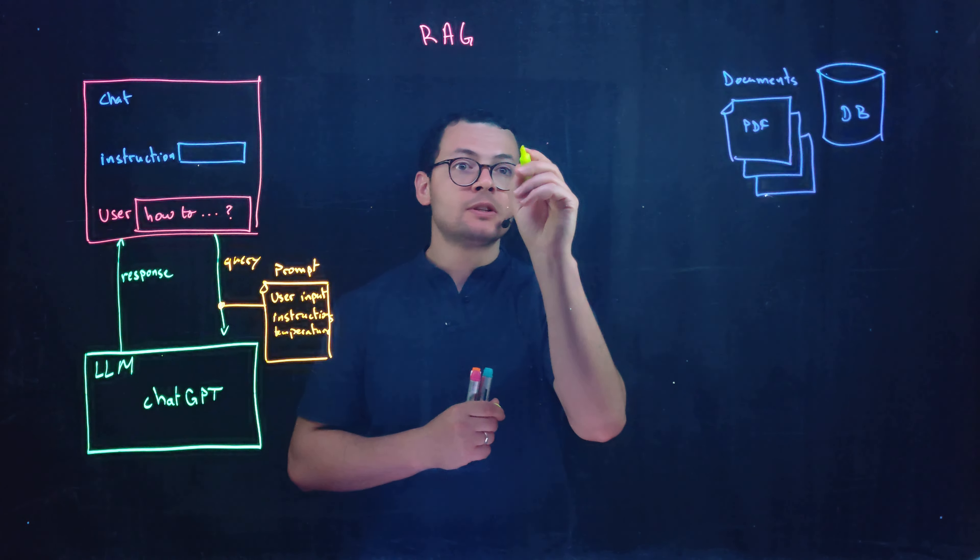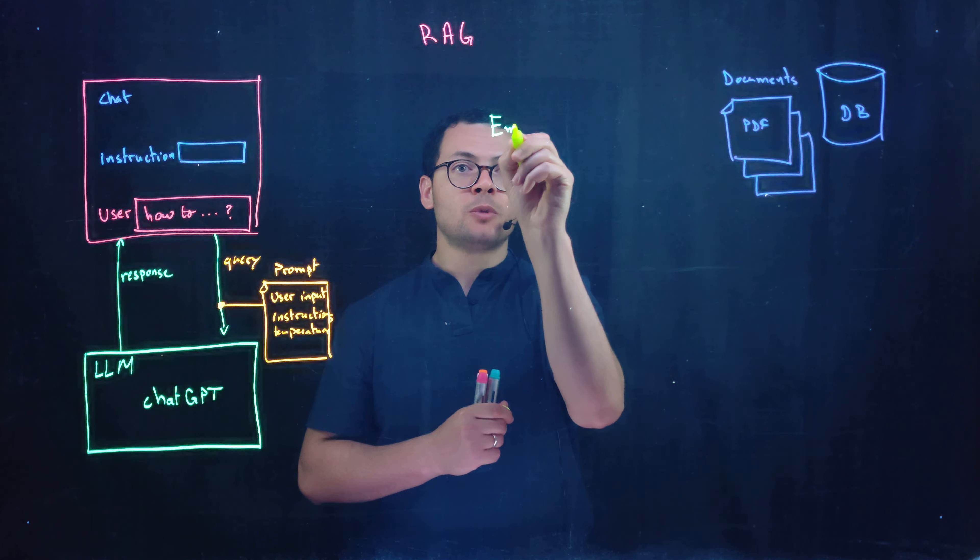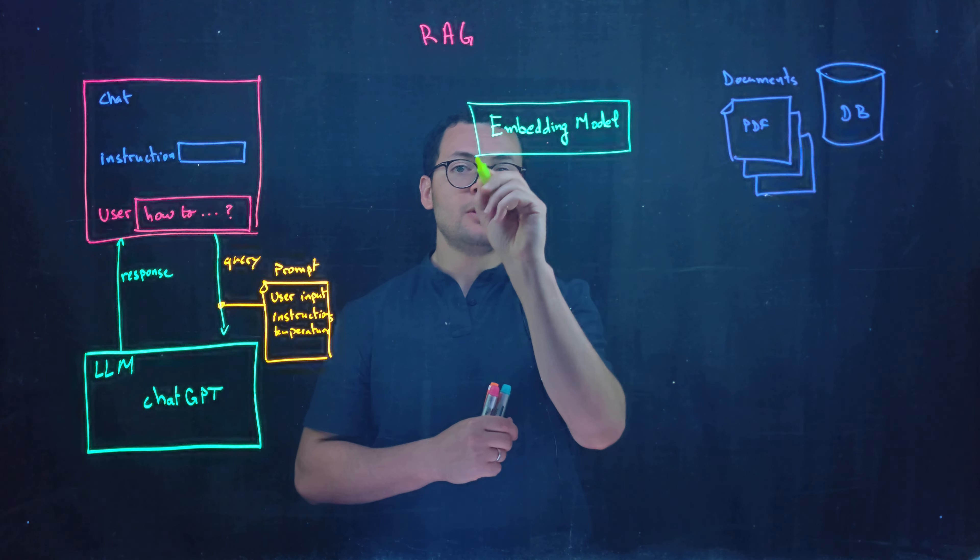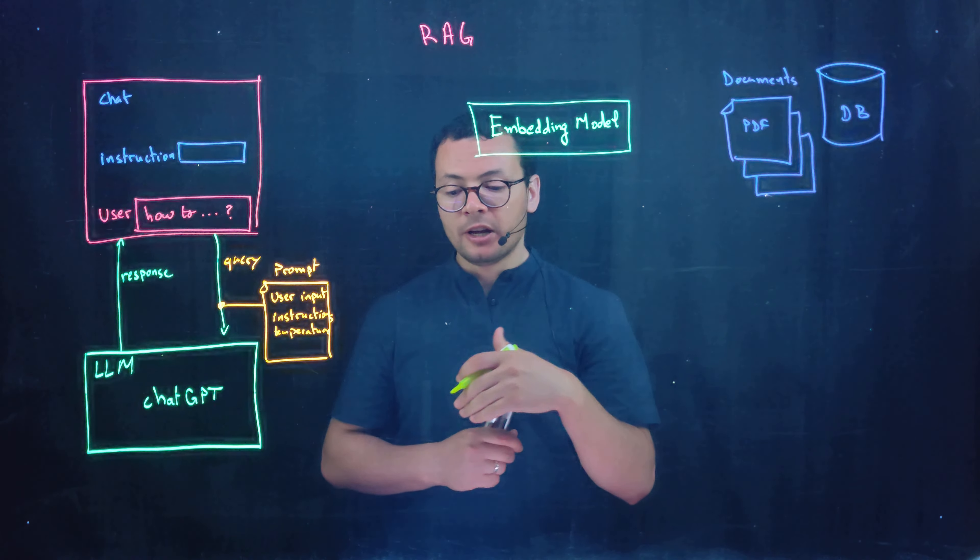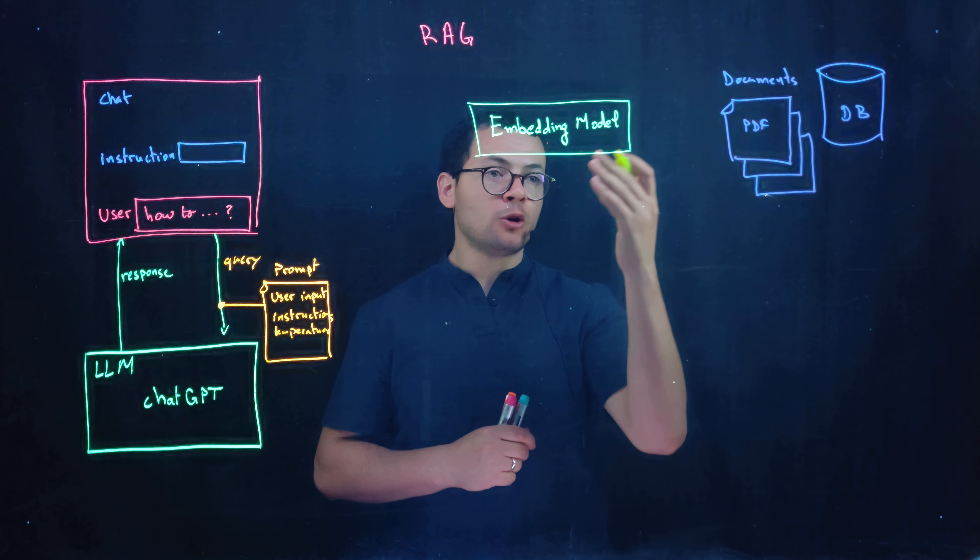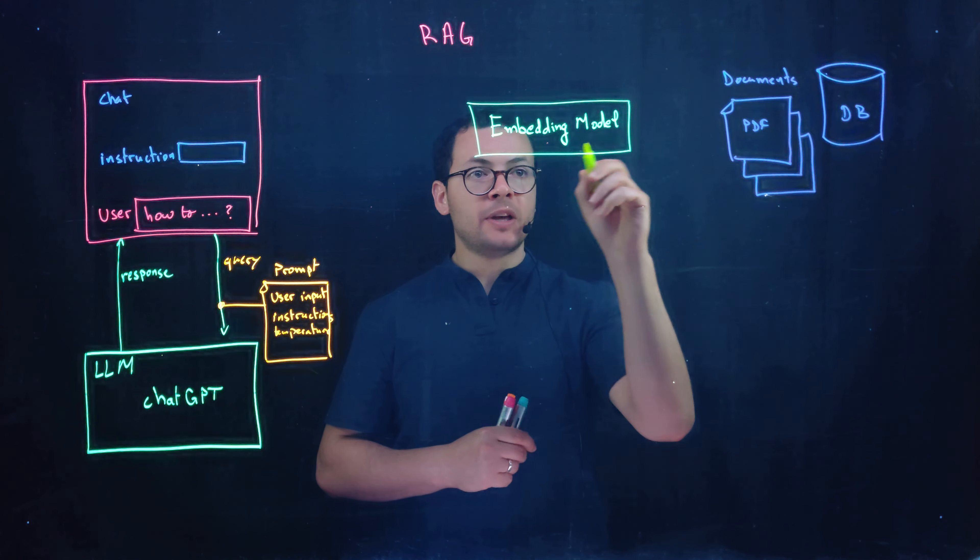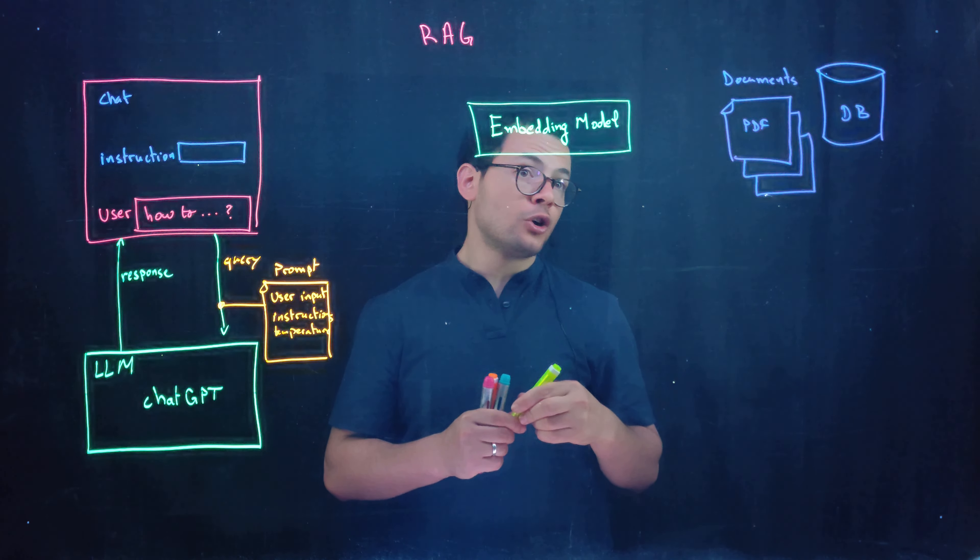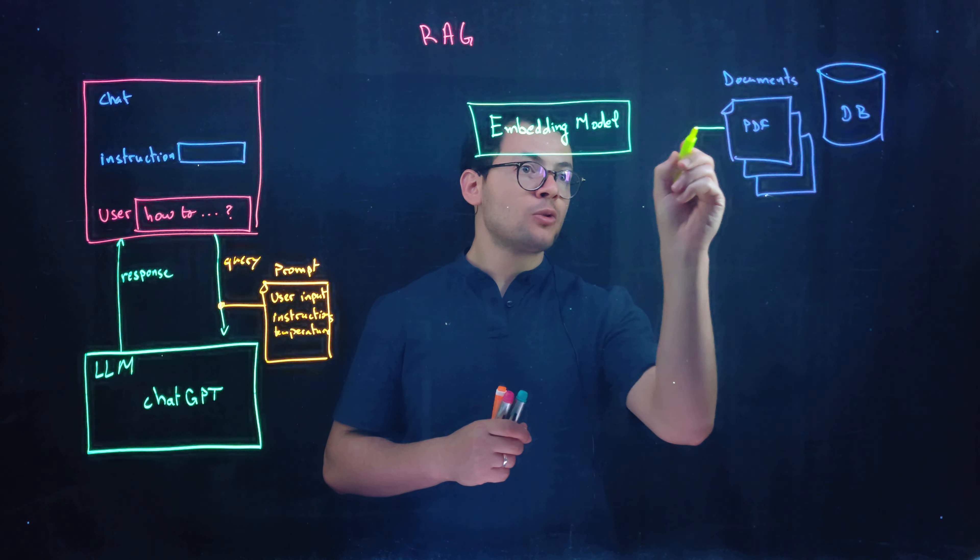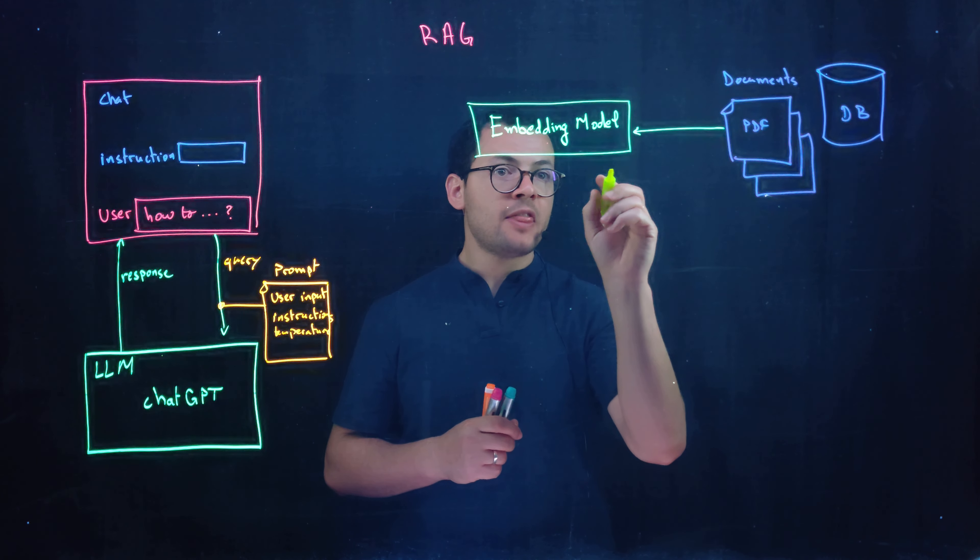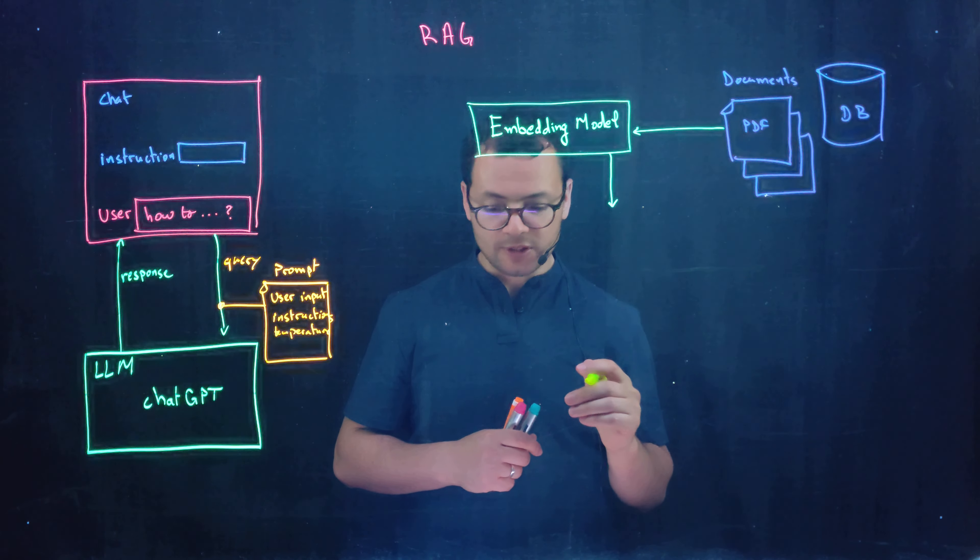Simply we'll use what we call Embedding Model. There are many available Embedding Models available like the one provided by ChatGPT or by OpenAI that is called Embedding Model 3, large or small. And what Embedding Model will do is that it will ingest those PDF documents and then it will produce vectors. It will index those PDF documents. So it will create multiple vectors.